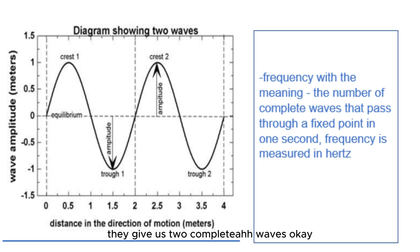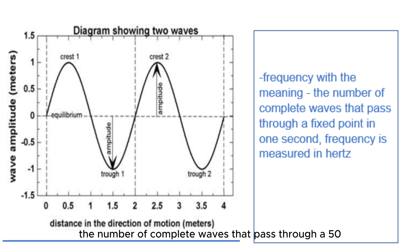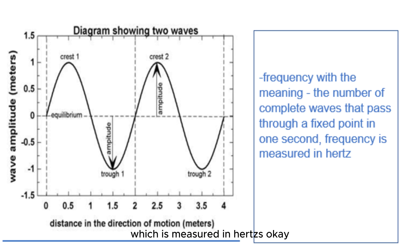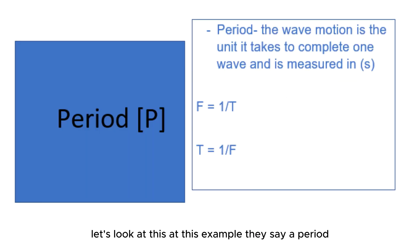The number of complete waves that pass through a fixed point is called frequency, which is measured in hertz.